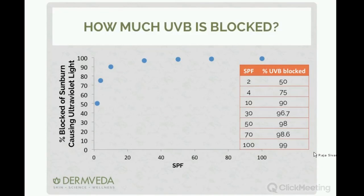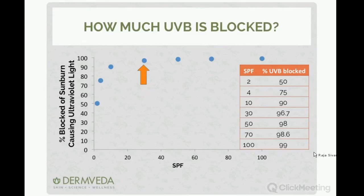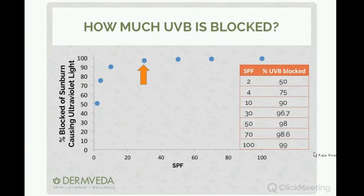When looking at how much UVB is blocked at different SPF levels, SPF 2 blocks 50% of UVB. The American Academy of Dermatology recommends at least SPF 30, because at that level you're blocking over 96.7% of UVB. As you go higher, you don't get much more protection — from SPF 30 to 50 you only go to 98%, and from 50 to 100 you gain just one extra percent. Focus on the ingredients first, then look at SPF.